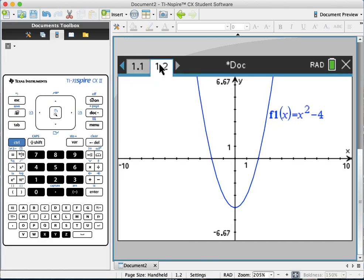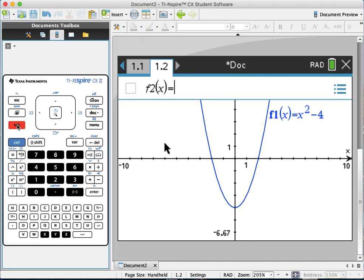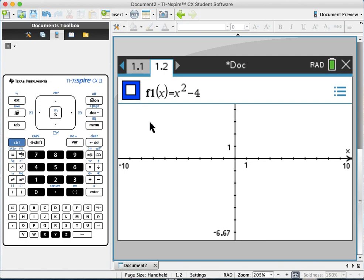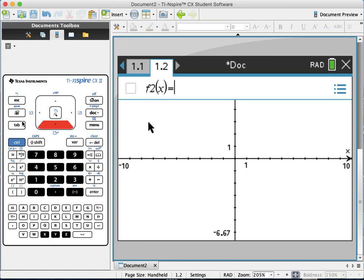So I'm going to my graphing tool. I press tab up because I want to deselect the first function. I don't want to see it, or I could just open a new tab. I go down and define my function x squared.